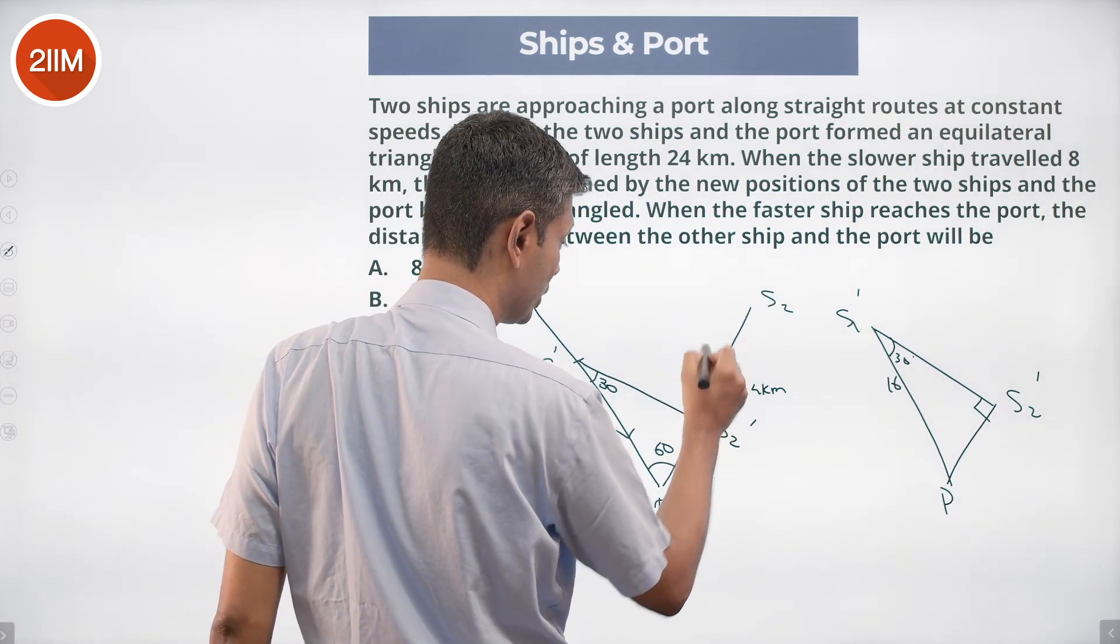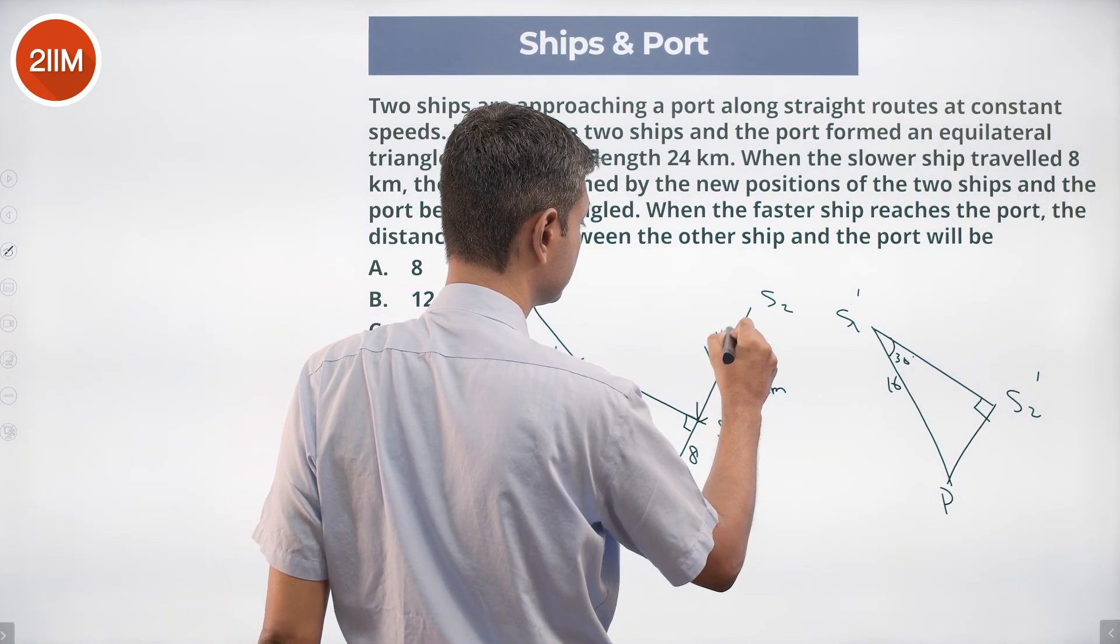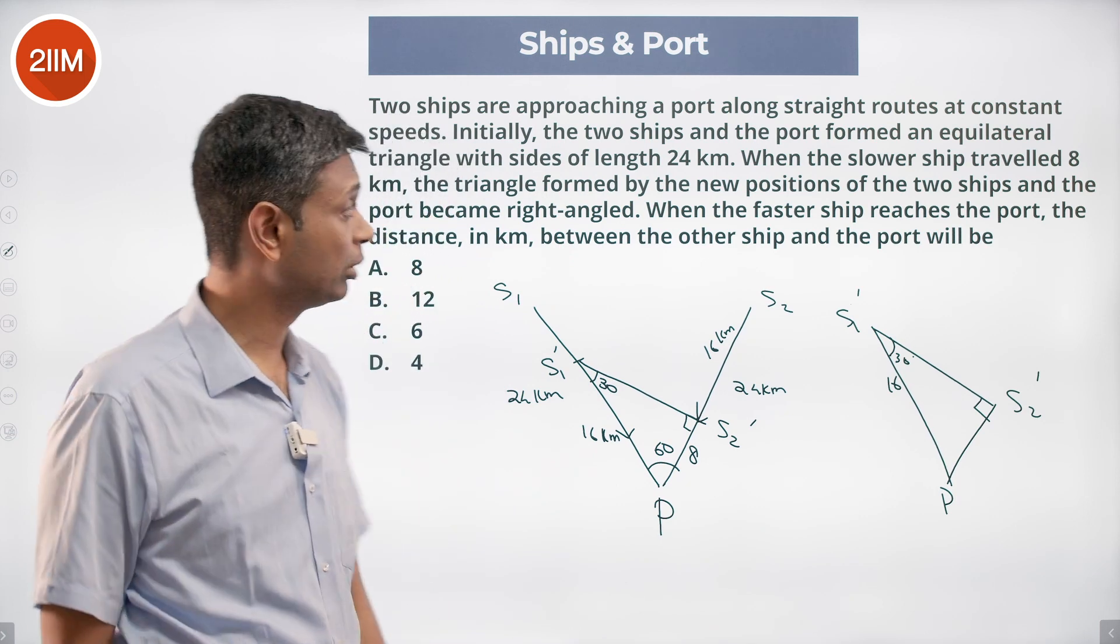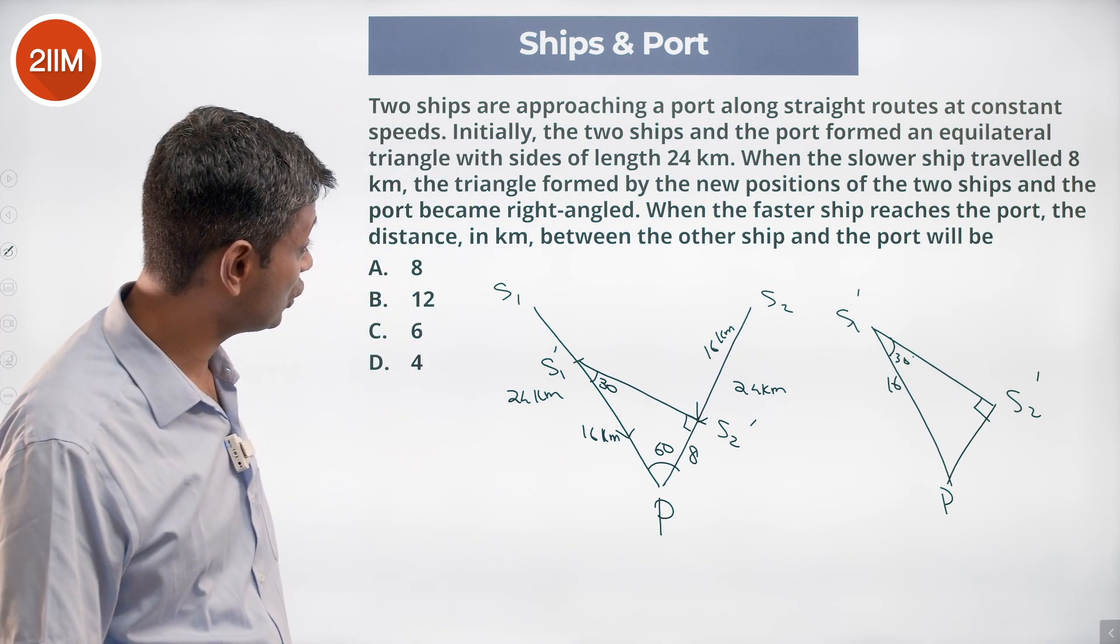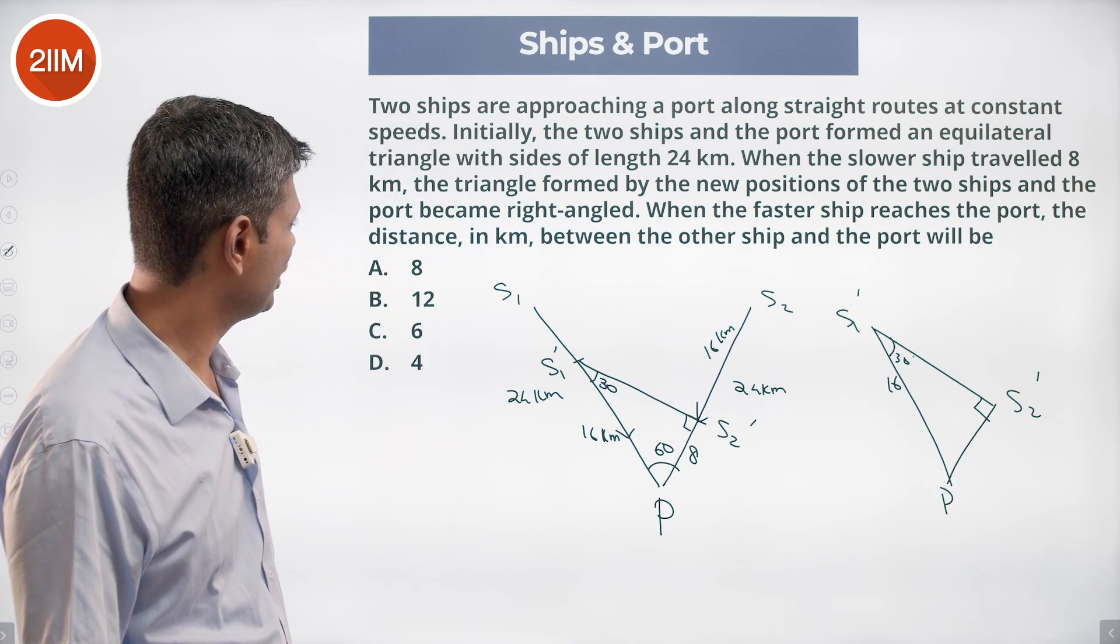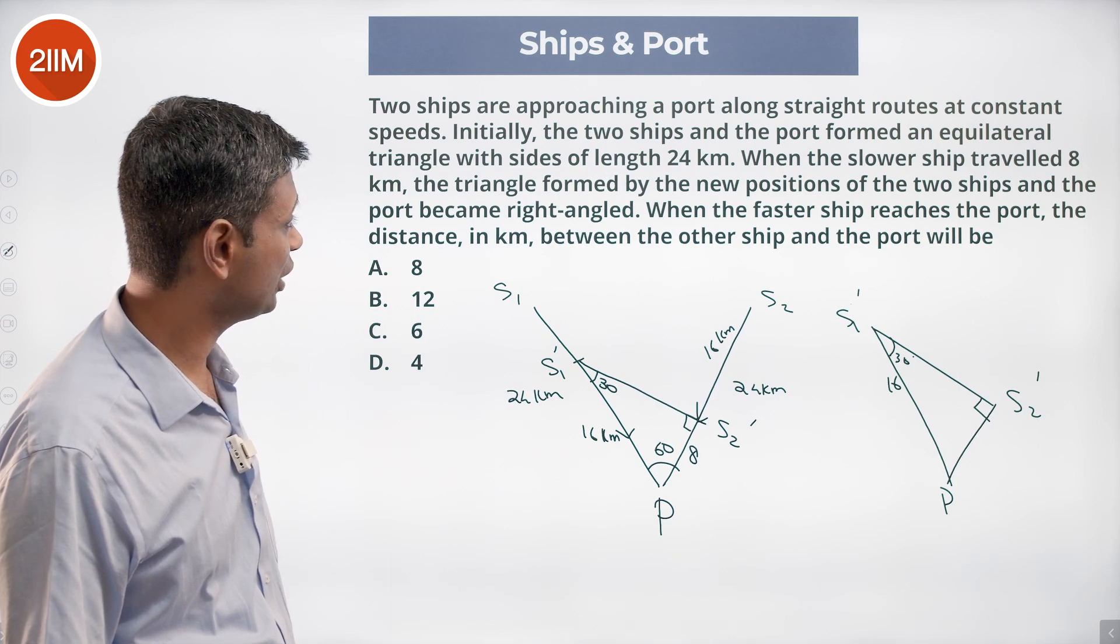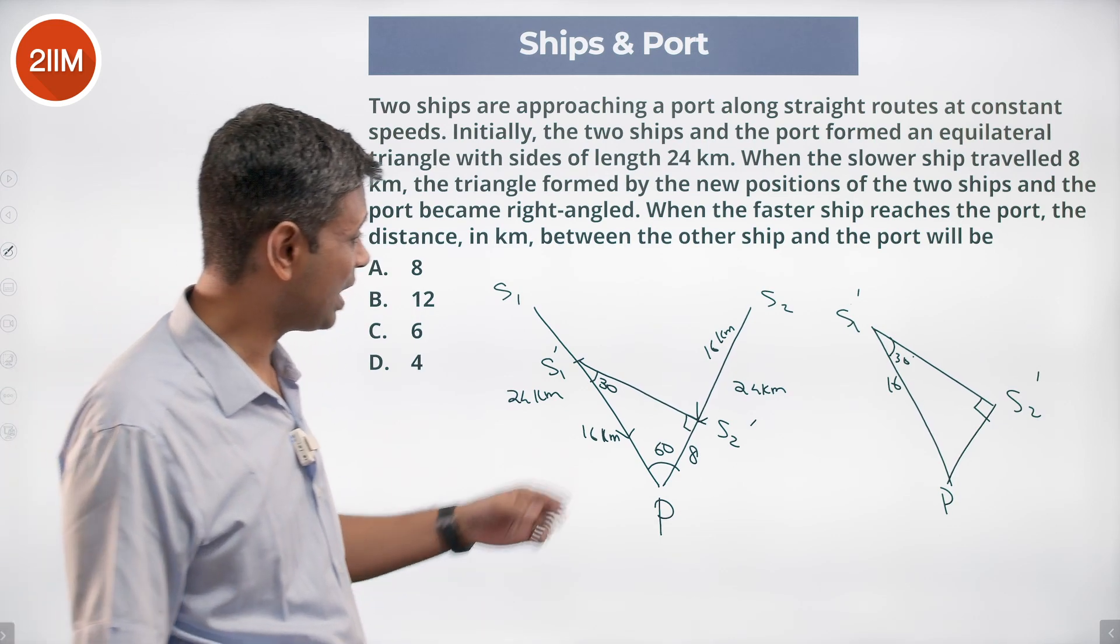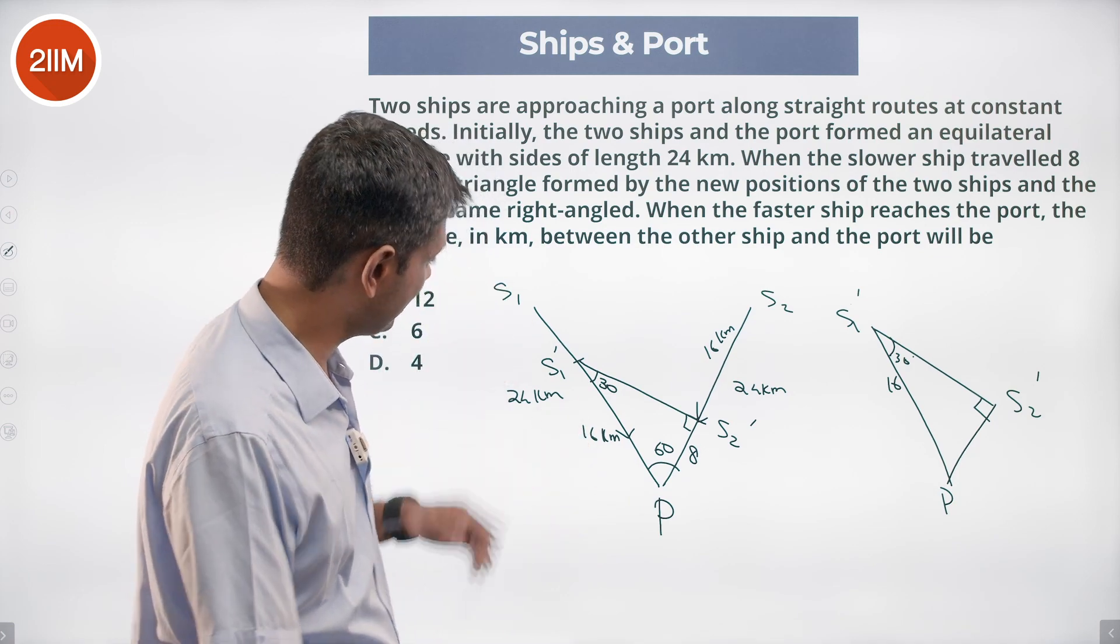That means s2 to s2 dash p should be 16 kilometers. Nice, brilliant. When the faster ship reaches the port, the distance in kilometers between the other ship and the port will be: the faster ship, since the slower ship travels 8 kilometers, the faster ship travels 16 kilometers.